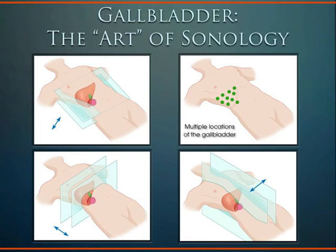The gallbladder will test your ability to find it many times — it's really the art of sonology. You may be in a coronal, transverse, or sagittal plane depending on where the gallbladder lies. Have the patient take a deep breath, roll them on their side, look between the ribs. There are additional gallbladder pathology pitfalls to cover as the year progresses.